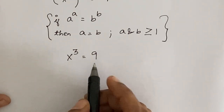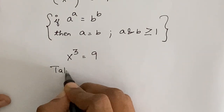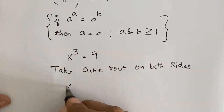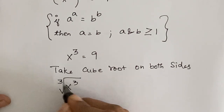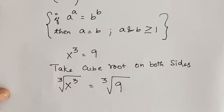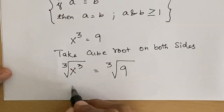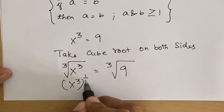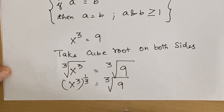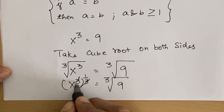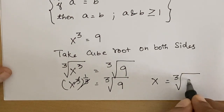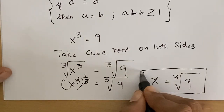Now let us take the cube root on both sides. We get the cube root of x cubed equals the cube root of 9, which gives x cubed to the power 1 over 3 equals cube root of 9. Since 3 and 3 cancel out, we get x equals cube root of 9.